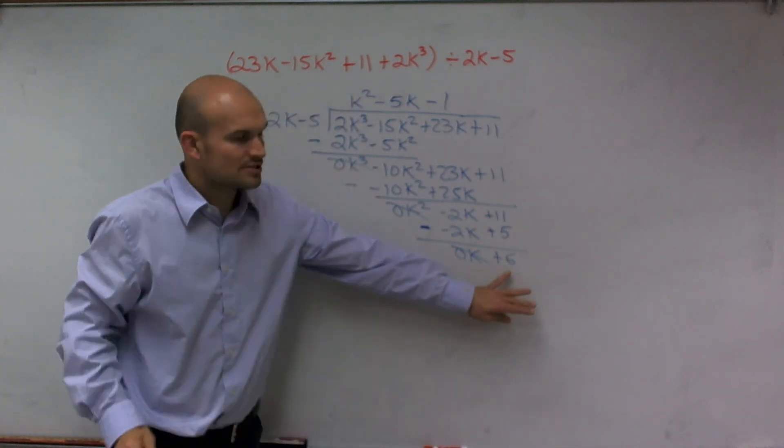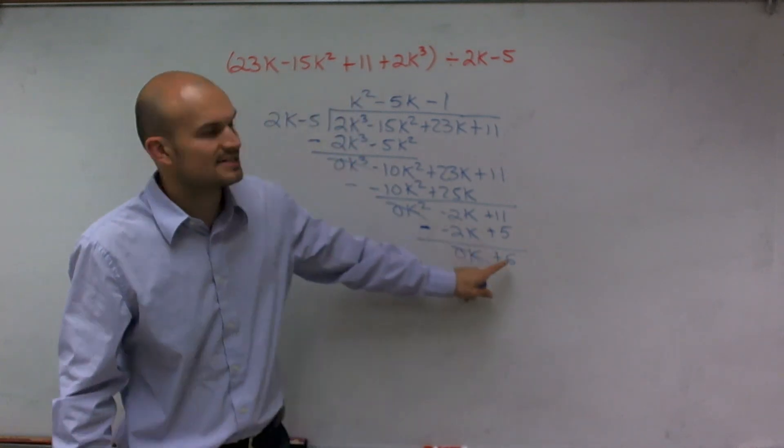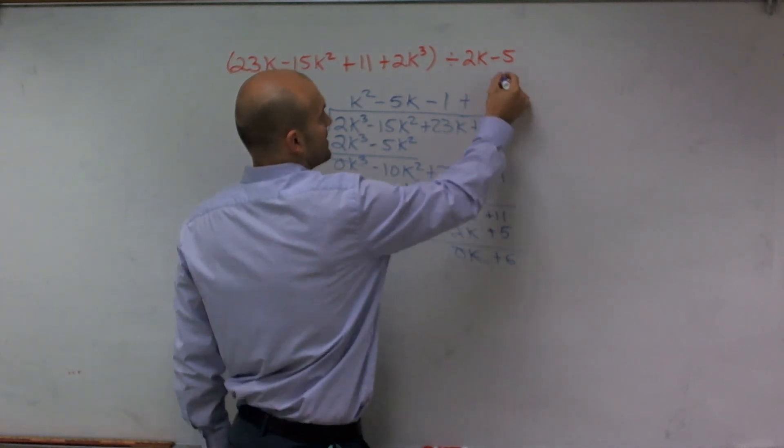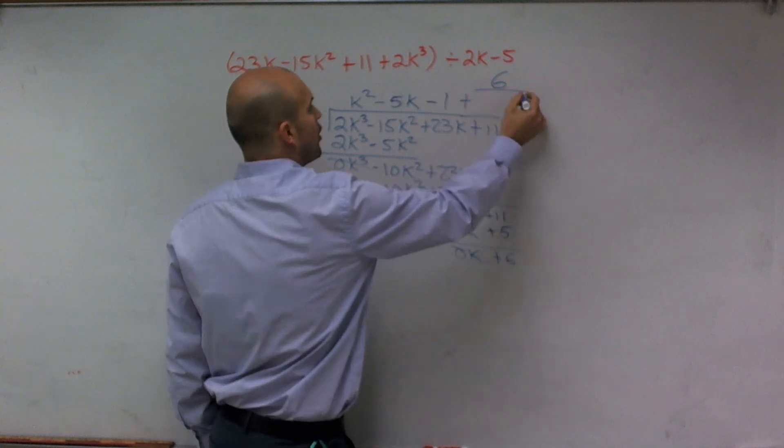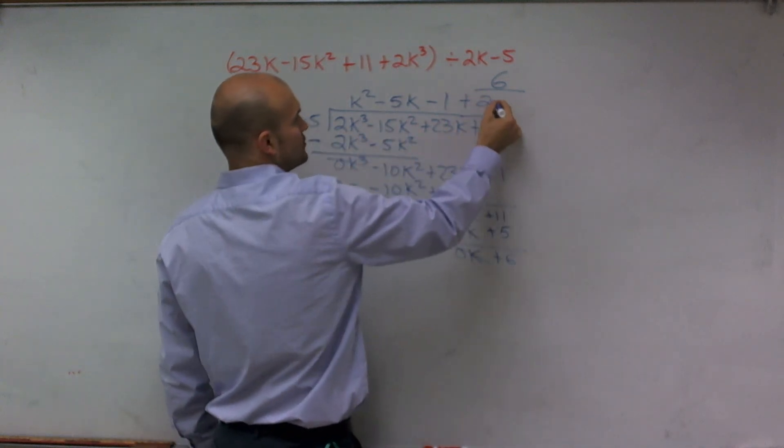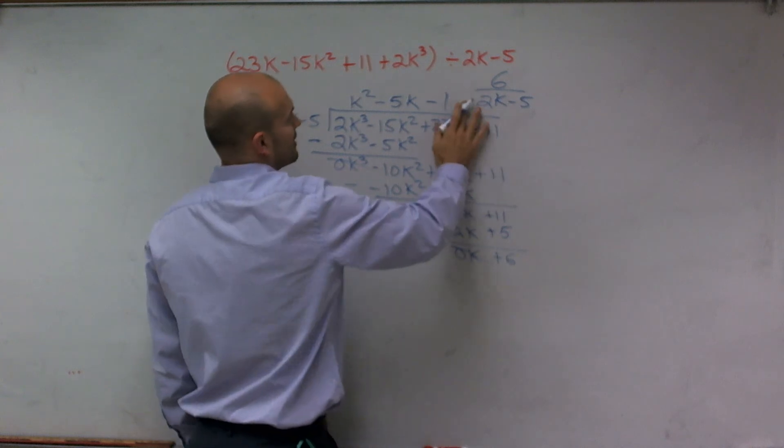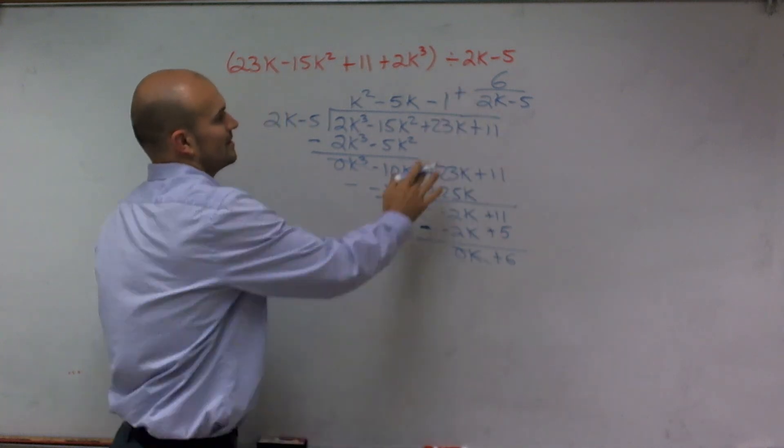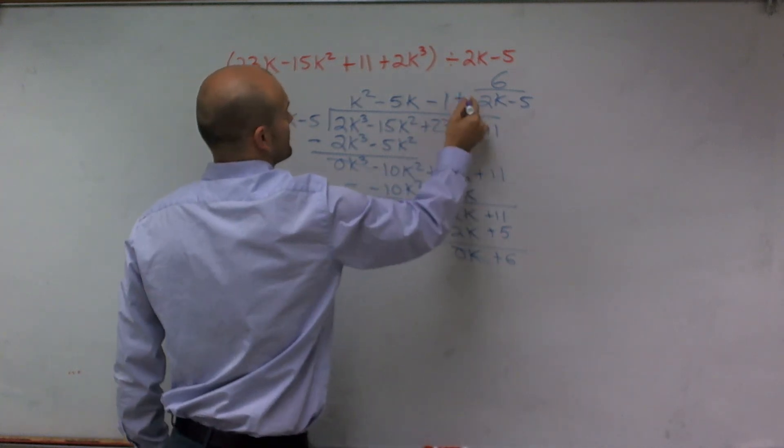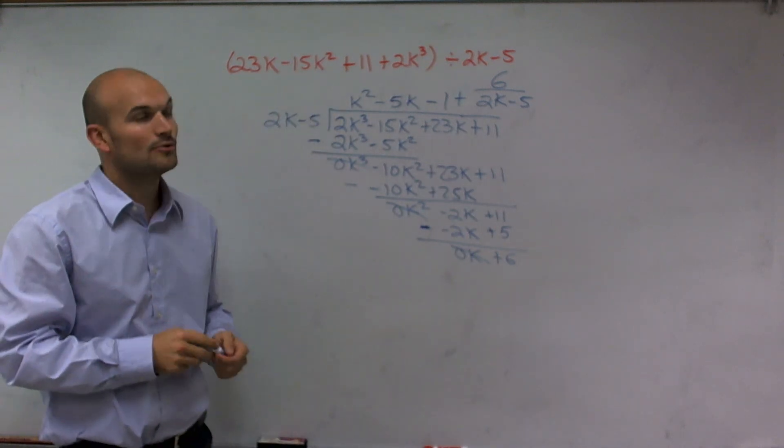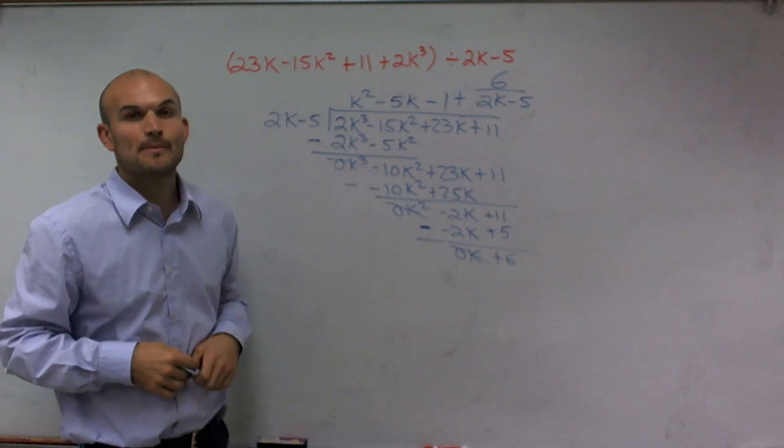So now, this is going to be a remainder because 2k does not divide into 6 evenly. So what I'm going to do is I'm going to take my remainder and then put it over my divisor, which is 2k minus 5. And that is where our remainder. And then, ladies and gentlemen, that's how you divide a binomial into a polynomial. Thanks.